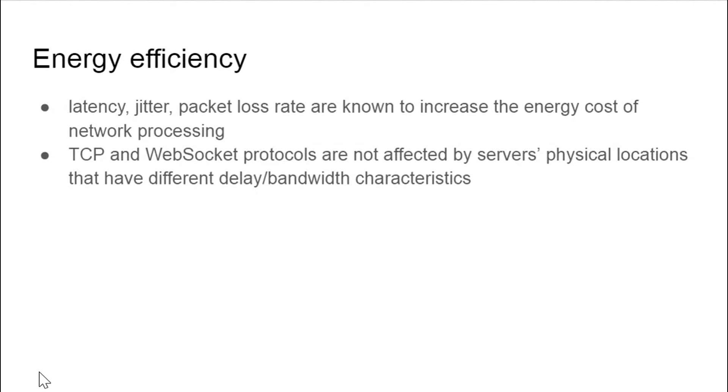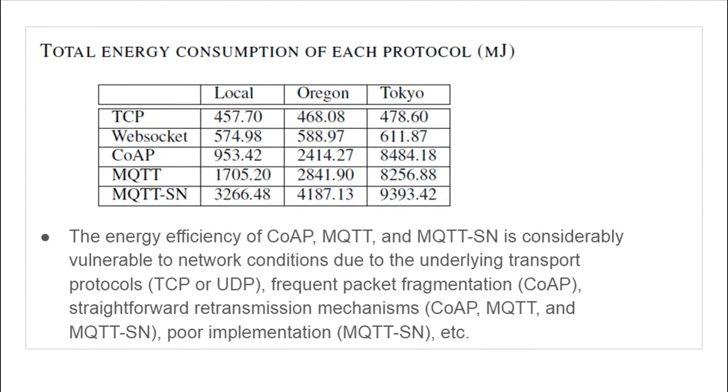When it comes to energy efficiency, TCP and WebSocket protocols are unaffected by physical location of servers having different delay or bandwidth characteristics. CoAP, MQTT, and MQTT-SN have low energy efficiency due to underlying transport protocols, packet fragmentation, and poor implementation. As in the performance experiment, CoAP's energy consumption increases with packet sizes greater than 1024 bytes. When the package size is larger than 1024 bytes for MQTT in the Oregon and Tokyo cases, it consumes less energy than CoAP. For relatively larger package sizes, MQTT should be favored over CoAP. This result is analogous to the one obtained in the performance metric experiments.